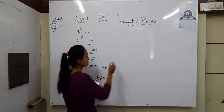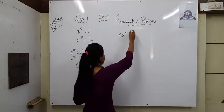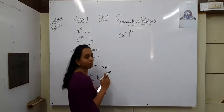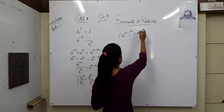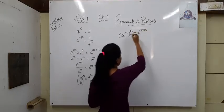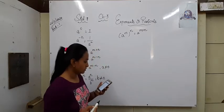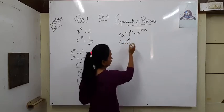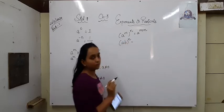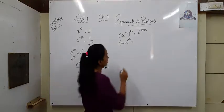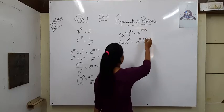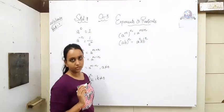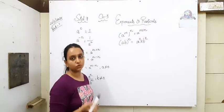Next is A raised to n, raised to n — meaning a power has its own power. In that case, we do multiplication of the powers: A raised to n multiplied by n, i.e., A raised to n into n. Another rule: A, B raised to n — under the bracket two numbers are there, and a single power is given after the bracket, so that power is distributed to both, giving A raised to n times B raised to n. So these are all the rules for exponents.